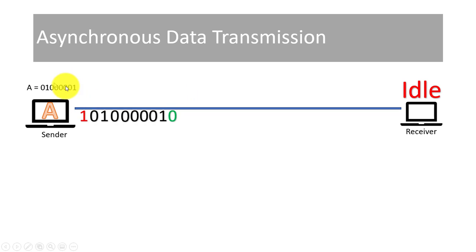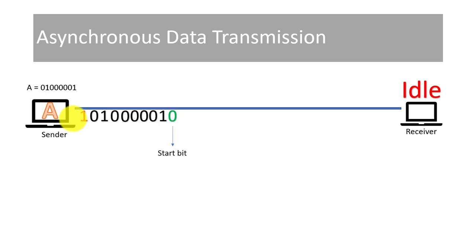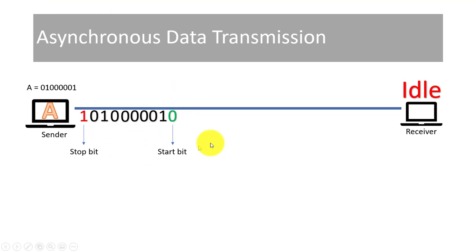Here we have eight bits which are represented. At the start we have a 0 and at the last one we have added a 1. This 0 represents the start bit and the 1 represents the stop bit. In asynchronous data transmission, we call it start and stop transmission because we use start and stop bits. The start bit is represented by 0 and the stop bit by 1.